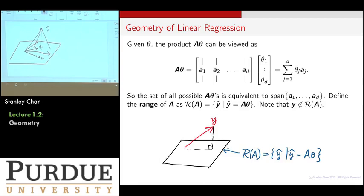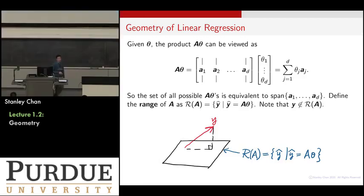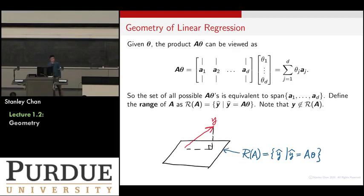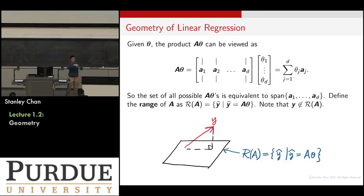The linear regression formula — that magical formula with A transpose A inverse — is doing exactly this projection. You give me a Y vector, and I look for the best linear combination among all the Ai's. I find one point that is a linear combination of A1 and A2, with regression coefficients theta1 and theta2 as your solution. This point is closest to your Y and lives in the span of your vector space. That's all linear regression is — just this simple picture.